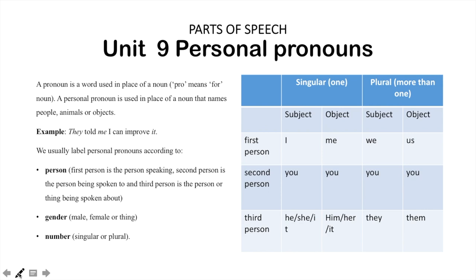For example: 'they told me,' 'I can improve it.' We usually label personal pronouns according to person: first person is the person speaking, second person is the person being spoken to, and third person is the person or thing being spoken about. We can also label pronouns according to gender — male, female, or a thing — or number: singular or plural.